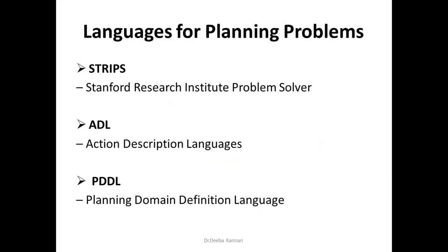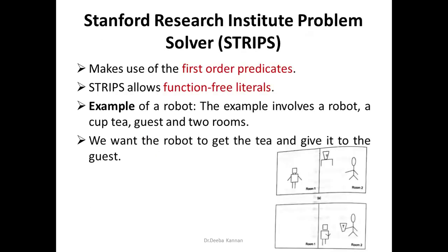There are three major programming languages used for planning problems. The first is STRIPS — Stanford Research Institute Problem Solver — the first planning language, which uses first-order logic statements. The second is ADL — Action Description Language — an enhanced version of STRIPS with additional capabilities. The third is PDDL — Planning Domain Definition Language — which is superior to both STRIPS and ADL and includes object functions.